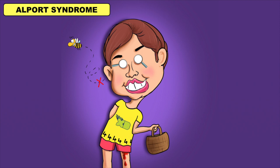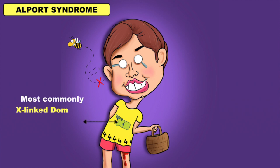Alport syndrome is a nephritic disorder characterized by the involvement of kidney, ear, and eye. It is most commonly an X-linked dominant disease. The Disney XD logo on the t-shirt will help you to remember that it is mostly X-linked dominant.